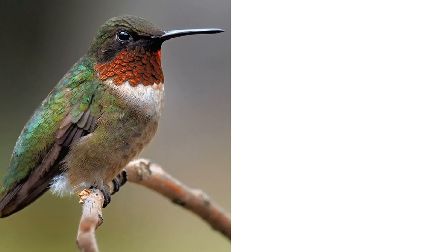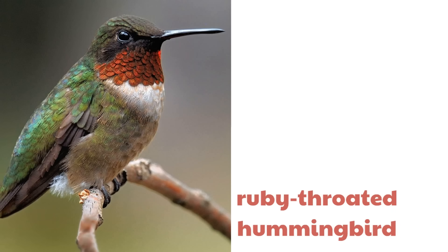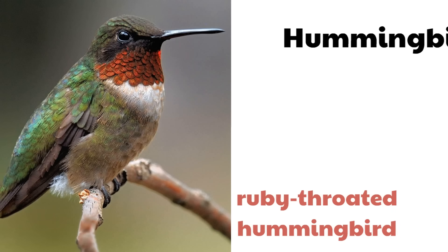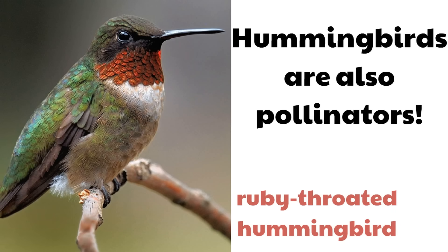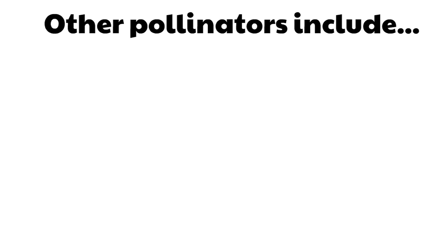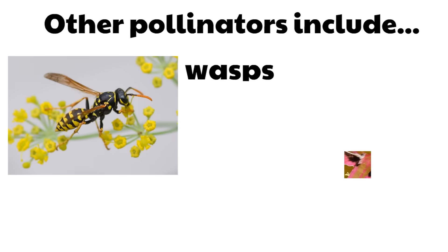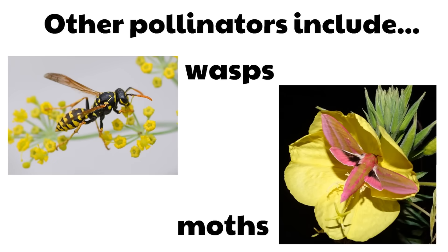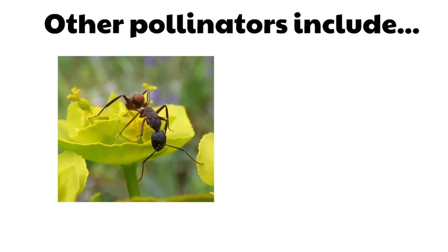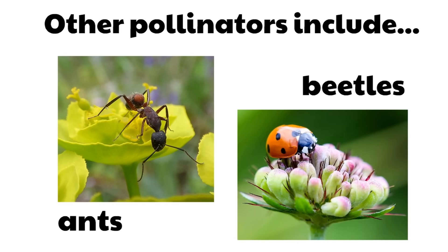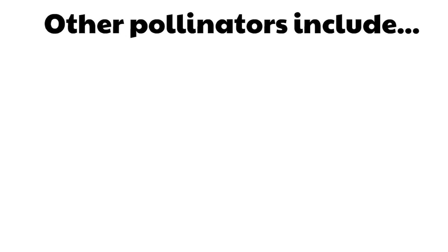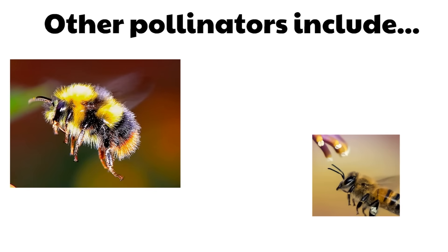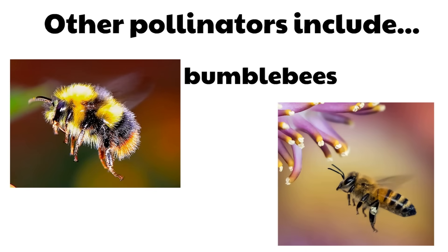What's this little guy called? Great job, this is a hummingbird — it's a ruby-throated hummingbird, and hummingbirds are also pollinators. Other pollinators include wasps and moths. Ants and beetles like this ladybug are pollinators too. These other well-known pollinators are bumblebees and honeybees.